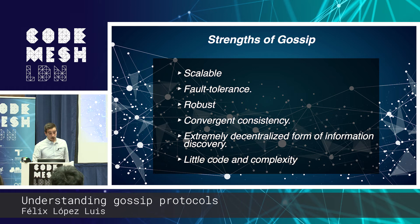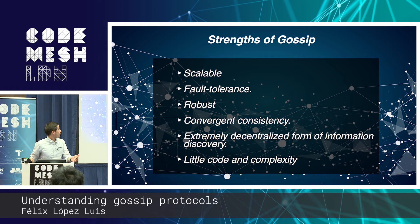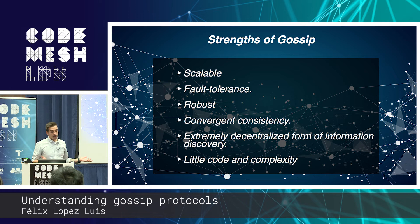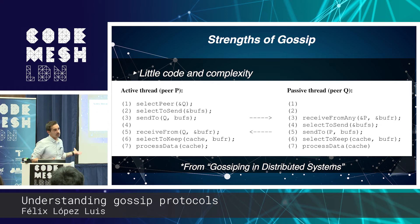Gossip protocols also offer converging consistency — nodes converge exponentially quickly to a globally consistent state, offering eventual consistency. The information spreads exponentially so it's very fast. They offer an extremely decentralized form of information discovery with very small latency — unless you need to consume information immediately, Gossip is more than acceptable. They're also generally simple to implement. There are caveats: building overlay networks is more complex, but compared to strongly consistent algorithms like Paxos, Gossip protocols are always relatively simple.